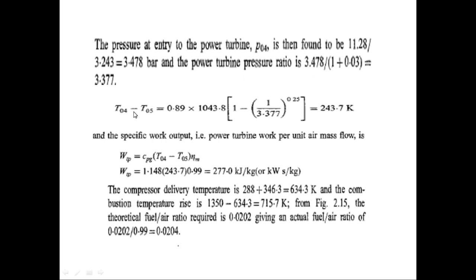Knowing p_04/p_05 = 3.377, the temperature drop in the low-pressure power turbine is T_04 minus T_05 = turbine isentropic efficiency times T_04 times (1 minus 1/(p_04/p_05)^0.25), which gives approximately 245 Kelvin. The specific work output produced by the power turbine per unit mass flow = mechanical efficiency times c_pg times (T_04 minus T_05) = 0.99 times 1.148 times 245 = 277 kJ/kg.